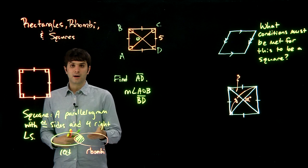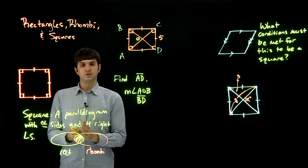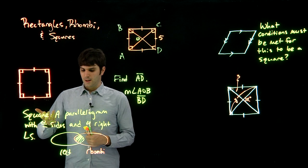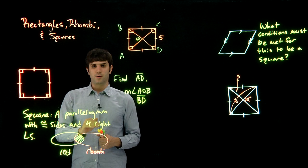So, not all rhombis are squares, not all rectangles are squares, but every square is a rhombi and every square is a rectangle because a square is a parallelogram with congruent sides, so that makes it a rhombus, and four right angles, that makes it a rectangle.